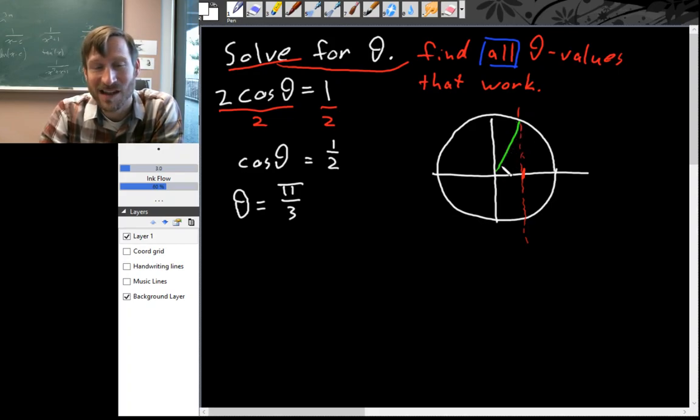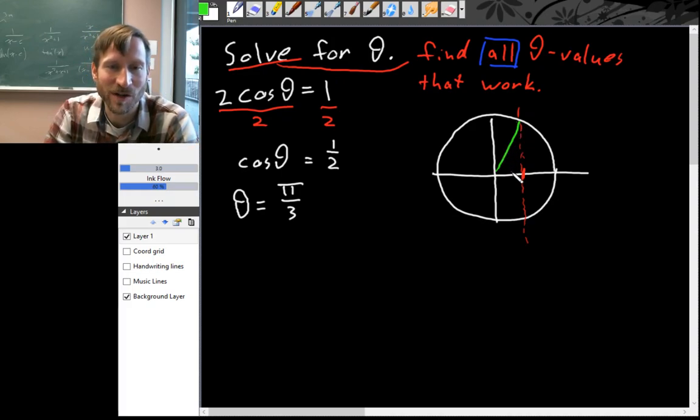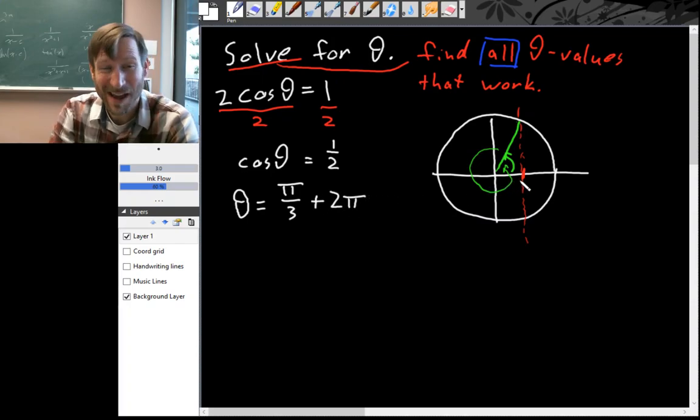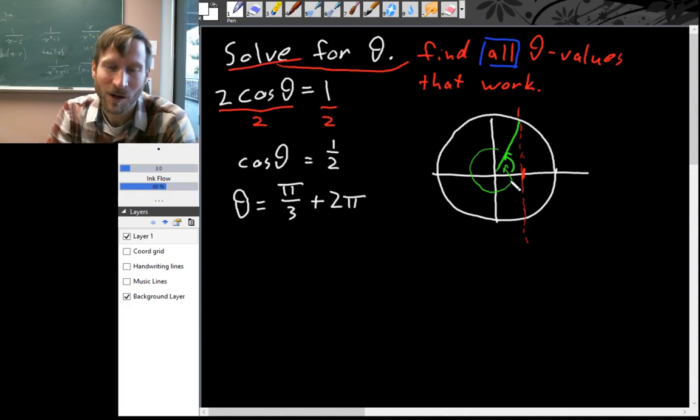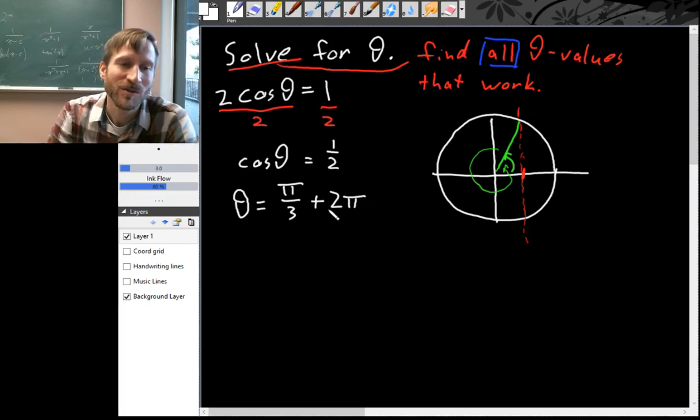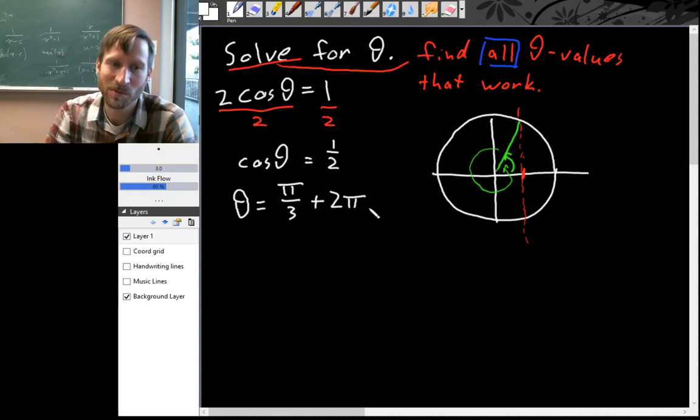You can see this green angle—there are actually lots of ways, lots of theta values that produce this green terminal side. We've drawn just the first one, π/3, that's going counterclockwise and stopping when you hit that green side. But we could go all the way around again, so we could add 2π, or we could go all the way around again twice, or three times, or four times. We could go backwards once or twice or three times or however many times you want.